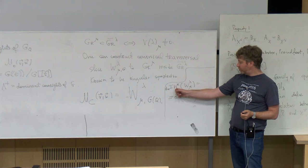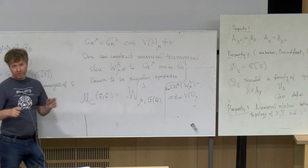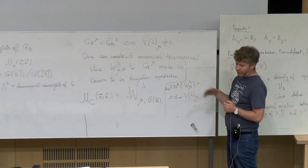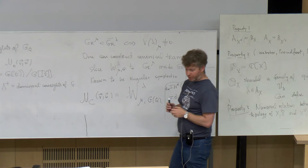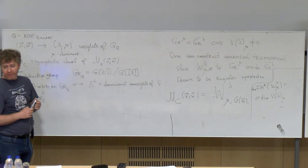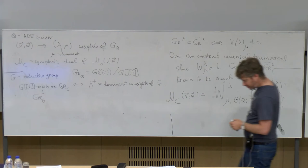One thing which comes from geometric Satake is that if you compute the intersection cohomology of this W^{lambda,mu}, its total dimension equals the dimension of the corresponding weight space. With the right modifications, some slightly twisted version of it is canonically the weight space, so roughly speaking we get that the intersection cohomology of the symplectic dual equals the weight space. This is going to be a general feature of symplectic duality — one of the numerical consequences you can derive from the categorical statement.